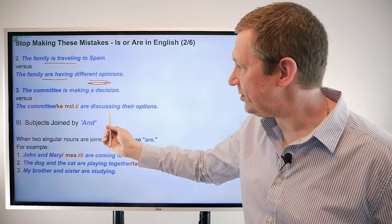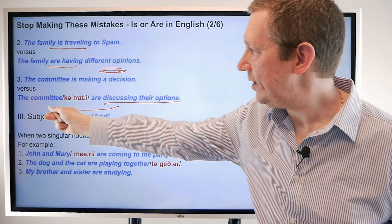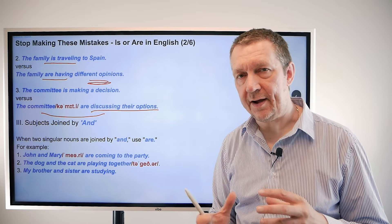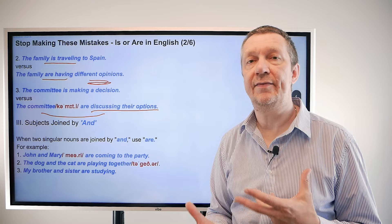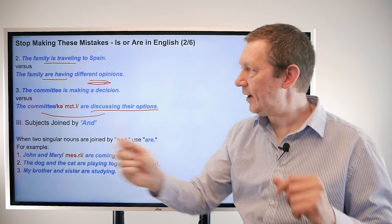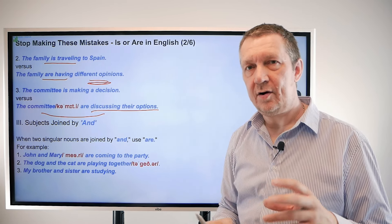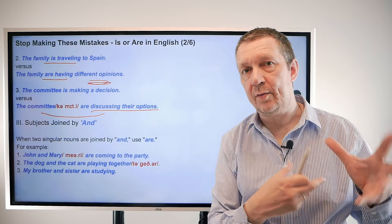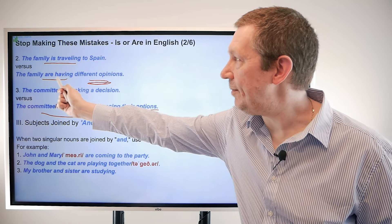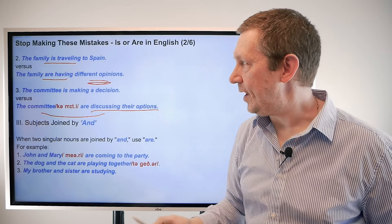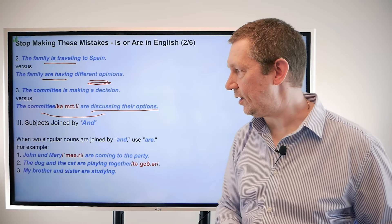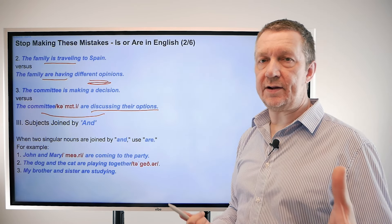When the committee 'are discussing their options,' this part of the sentence suggests a plural, so we use 'are.' A lot of this is about feeling the sentence — does it sound right? You have to remember: are you using the collective noun as a unit, or referring to a collection of people as individuals? If referring to them as individuals, like 'the family are having different opinions,' that's when we use 'are.'